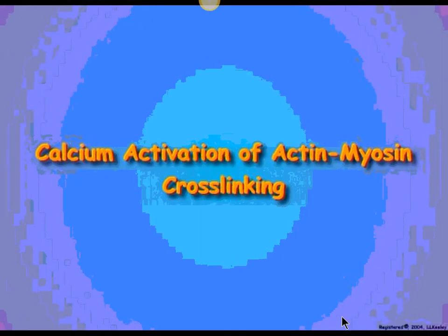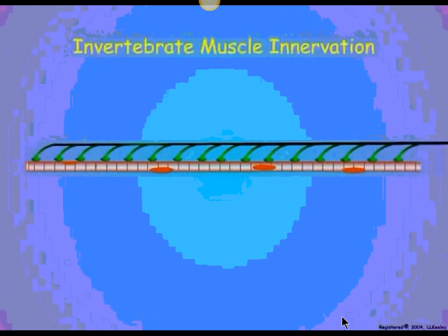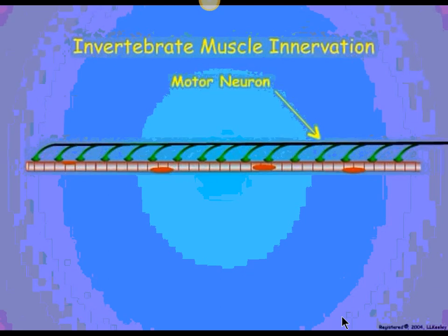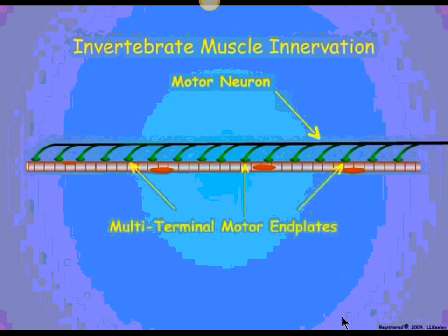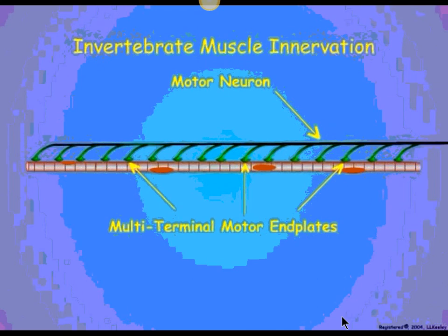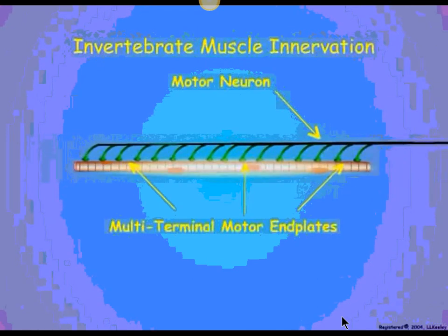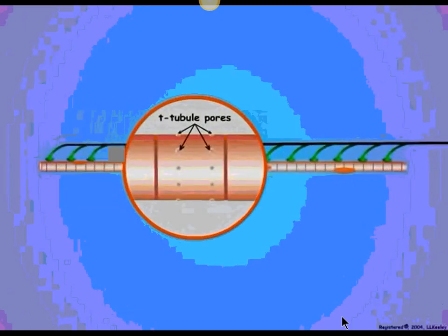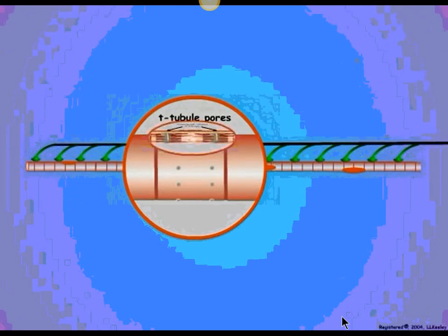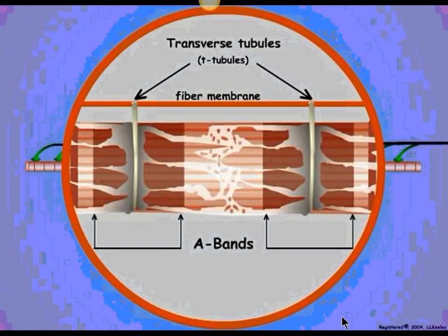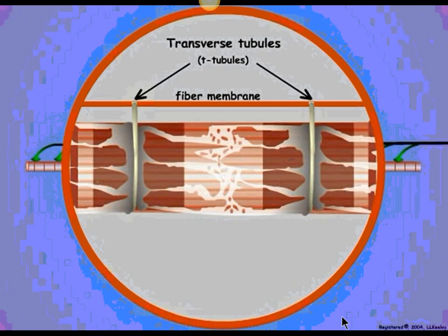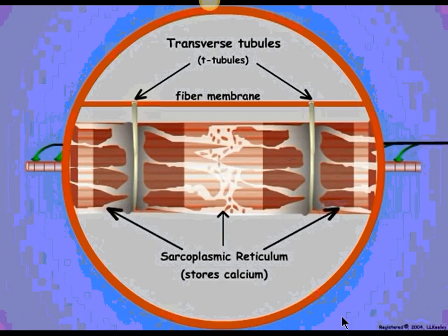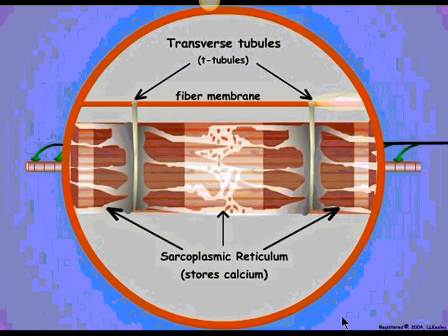This video shows the biochemical details of cross-linking and sliding of actin filaments by the myosin heads. The cycle starts when an electrical impulse from a motor neuron stimulates a muscle fiber. The electrical depolarization spreads into membranous invaginations called T-tubules, which extend to the myofibrils and align with the A-band. The T-tubules carry the electrical signal into the sarcoplasm and along the sarcoplasmic reticulum, which stores calcium.